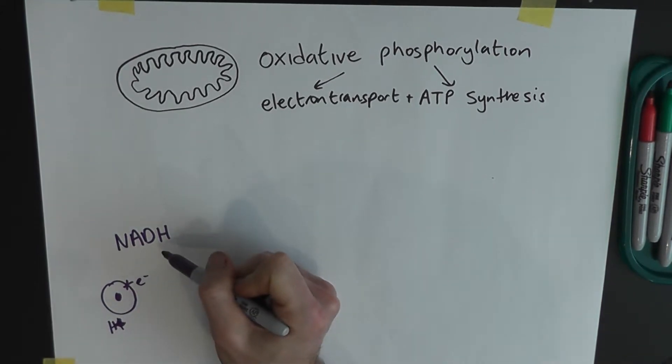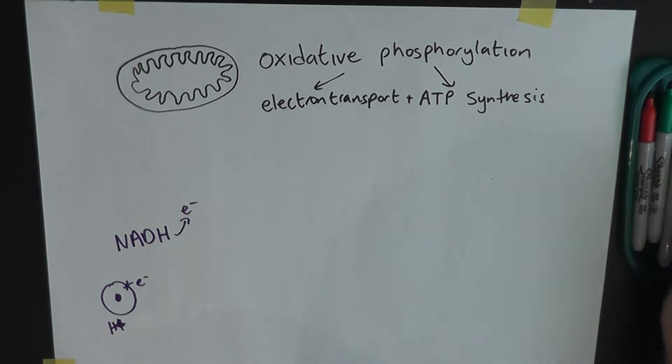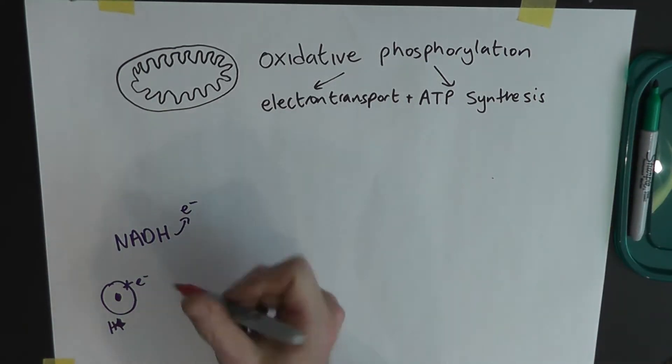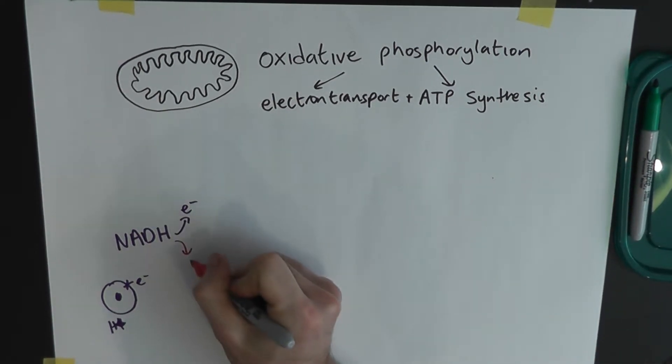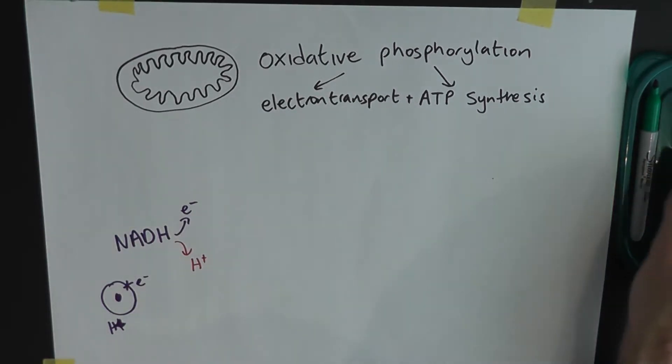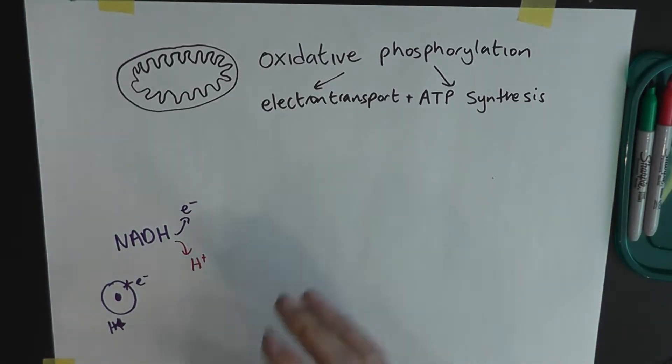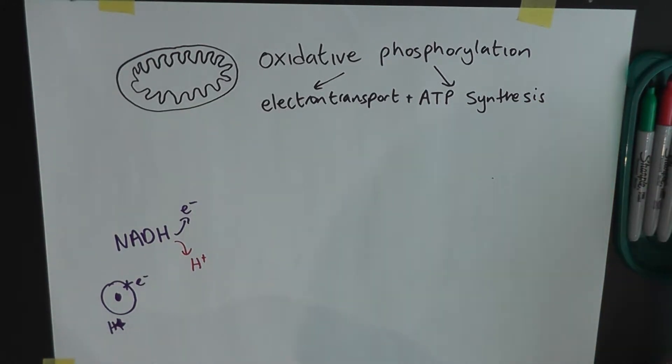And that's exactly what happens first, that H gets split into an electron, E-, and a proton, H+. And something happens to those electrons and the protons here on these cristae in the mitochondria.